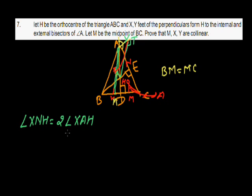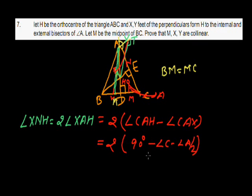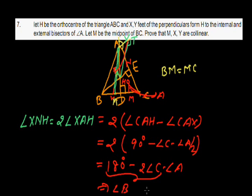We can say that angle XOH = 2 × angle XAH. Angle XAH is given by angle CAH − angle A/2, which equals 2(90° − angle CAH − angle A/2). Since angle CAH = 90° − angle C, this simplifies to 180° − angle C − angle C − angle B − angle C, giving 180° − 2·angle C = angle B − angle C.